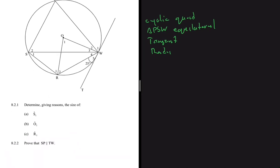8.2.1a says determine, giving reasons, the size of s1. So we are interested in s1 here. How can we use cyclic quad to determine s1? s1 is not a complete angle, so I don't see how we can immediately jump to s1. The next keyword talks about triangle PSW being equilateral. s1 is not in that triangle, so I don't see how we can use that.